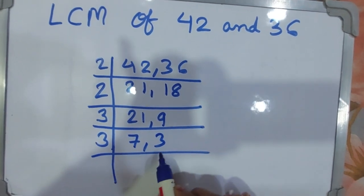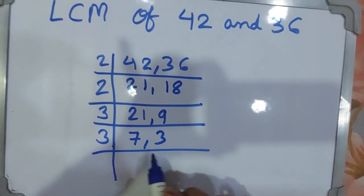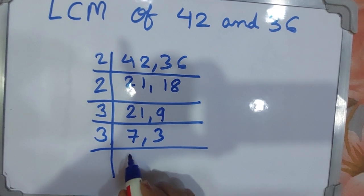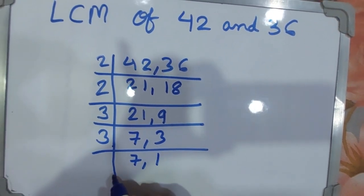Now, can both numbers be divided by 3? No, only one number. Write 7 as it is, and 3 ones are 3.